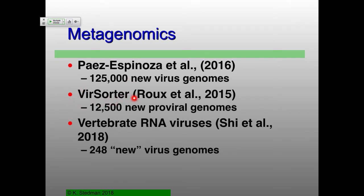There's another paper from Simone Roux, a good colleague of mine. They went and looked for viral genomes in a smaller set of data and had this neat software tool they call ViralSort. I reviewed the paper — I thought it was really cool. They had 12,500 new proviral genomes — actually complete genomes that were in bacterial genomes. They were just screening through all these bacterial genomes with this new software and found all of these new sequences.